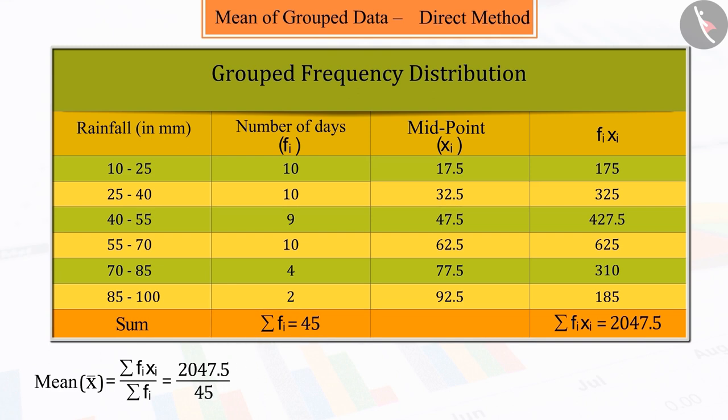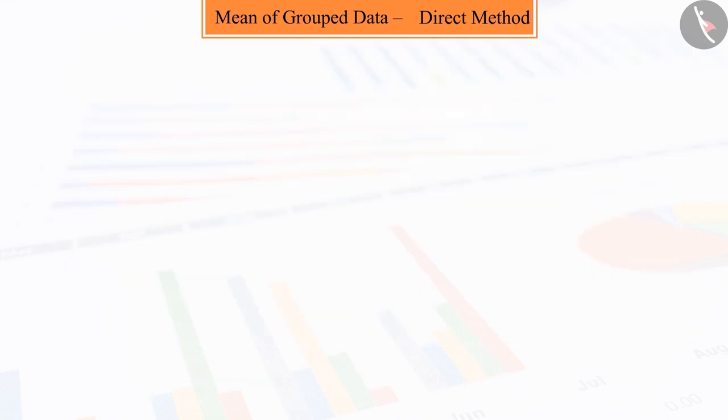On solving this, you get 45.50. So, we can say that the mean of rainfall occurring in 45 days is 45.50 mm.